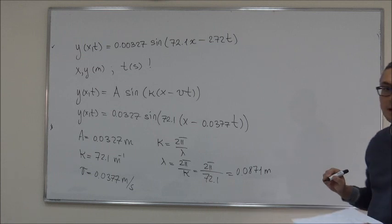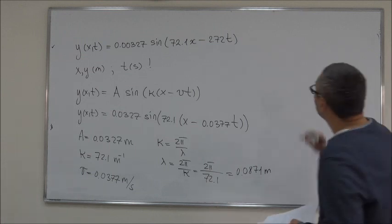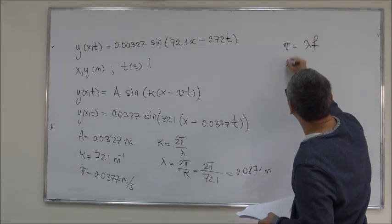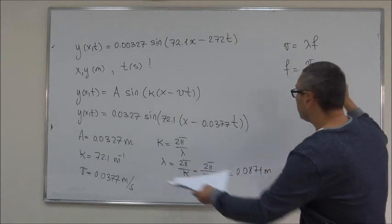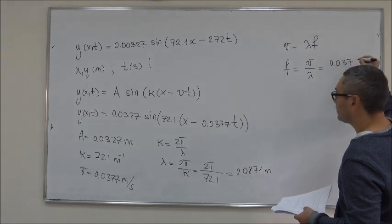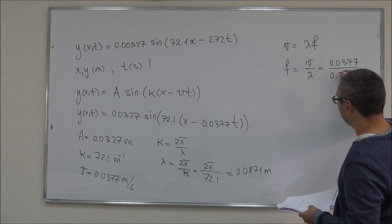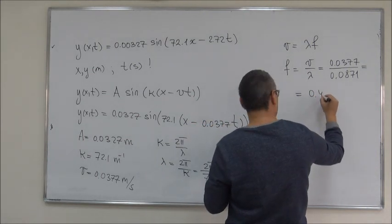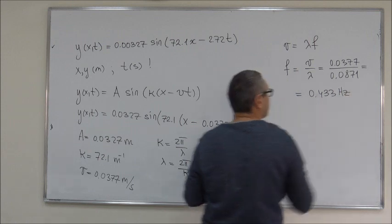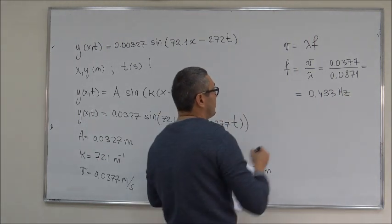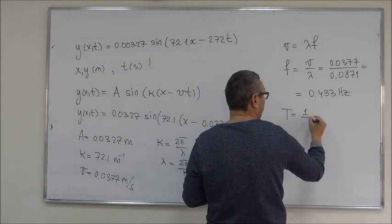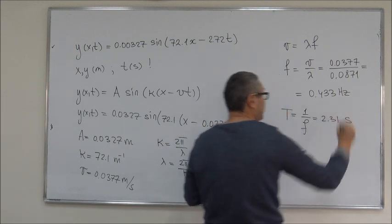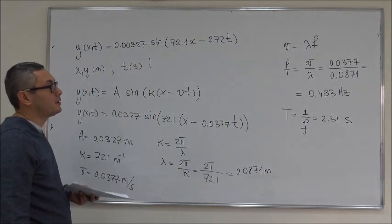The next thing we need to calculate is the frequency of the wave. Well, we know that frequency is related to the velocity as follows: v = λf, so f is equal to v over λ. We know v, that's 0.0377, over λ, that's 0.0871, and if you calculate that, this gives you 0.433 hertz, that's the frequency. And the next thing we need to find is the period, which is inverse of the frequency, so you just substitute for f, and you get 2.31 seconds. So now we found all the parameters of the wave.